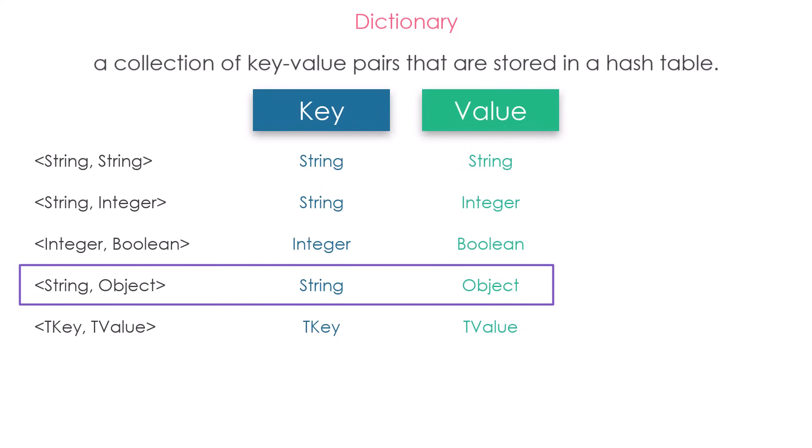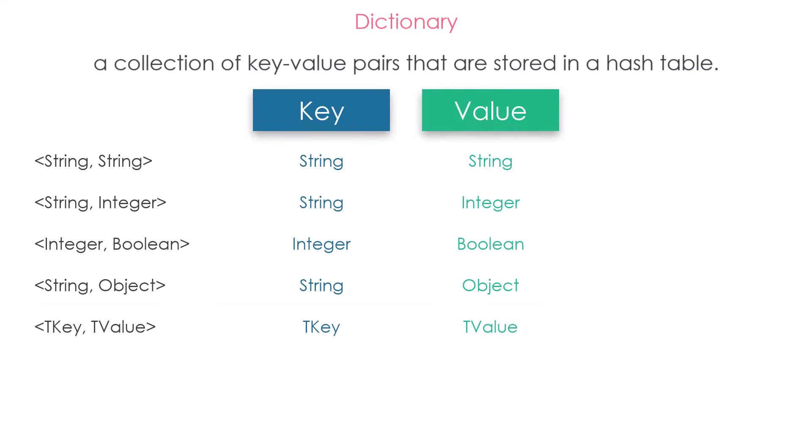In other words, object could be a string, a number, boolean, data table, or any other type — even a dictionary. But this must not be the case and you could use any type you need as mentioned. Let's now see how to create a variable of type dictionary in UiPath, how to declare this variable, so that we can store data later in the variable.